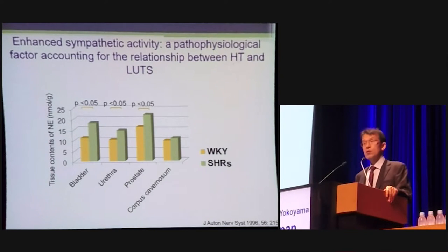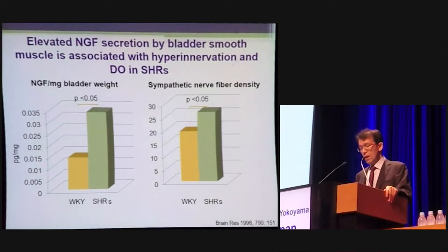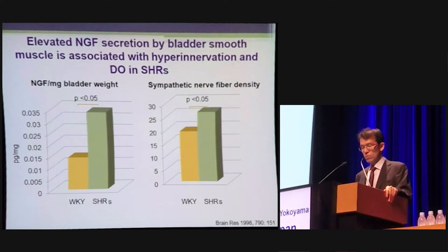Tissue concentration of norepinephrine is significantly higher in the blood vessels and prostate of SHR. NGF and sympathetic nerve fiber density were also elevated in SHR.